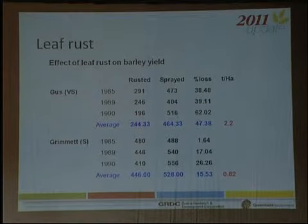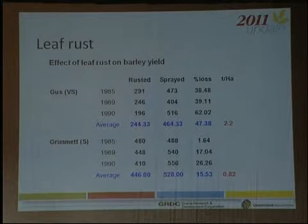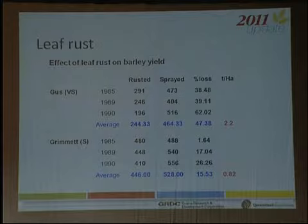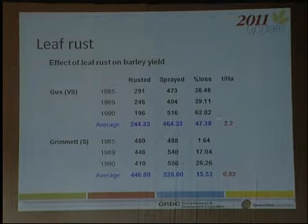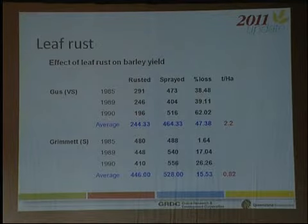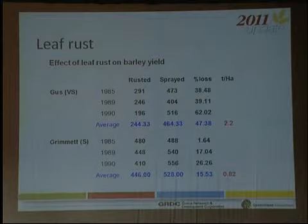Kim McIntyre last year gave a brilliant presentation showing the effects of barley leaf rust in a very susceptible variety compared to a susceptible one. In 1990 we did work with Gus, an old American variety, and recorded a 62% yield loss to leaf rust. Anyone who handled Grout crops this year and saw the leaf rust in Grout would think that's probably an underestimate — it was terrible. It's an outstanding case of having a very susceptible variety in the system and then trying to control the disease.